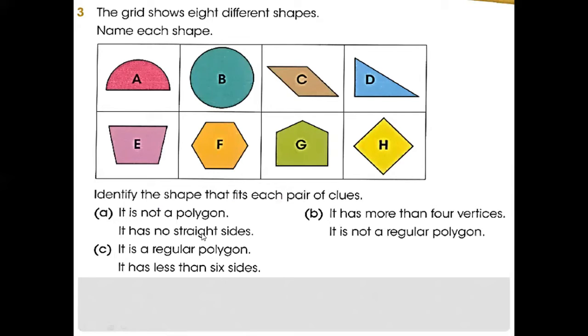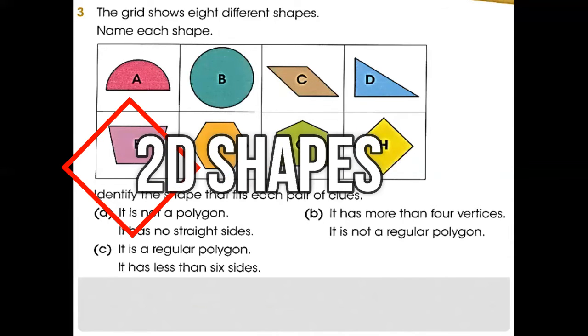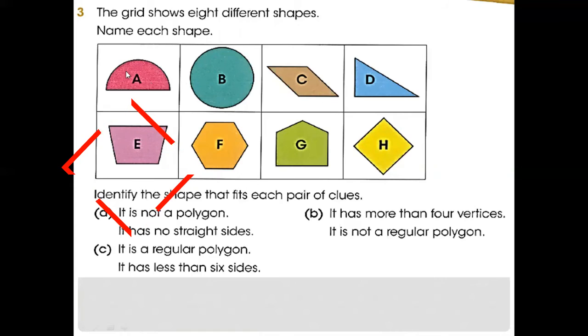Now, as seen in the third question, the grid shows eight different shapes. Name each shape. The first shape is called a semicircle. The B part is called circle. D part is right-angled triangle. C part is parallelogram. E part is trapezium.